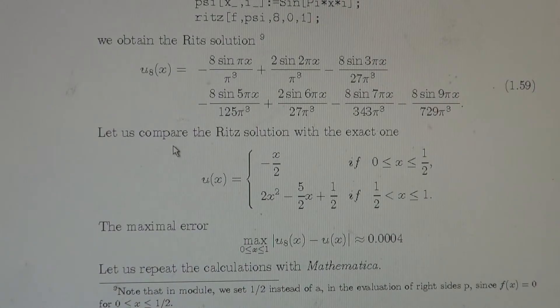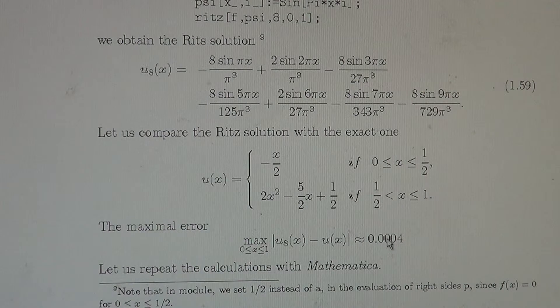We obtain the approximate solution with eight terms, which we see here. We know the exact solution. Let us recall that the exact solution is u of x minus x over 2 in 0 to half interval, and 2x squared minus 5 over 2x plus half in the interval half 1. The maximal error, we are now able to evaluate the maximum error, the difference between the approximate solution and the exact one. That maximal error is 0.0004, it is very good.